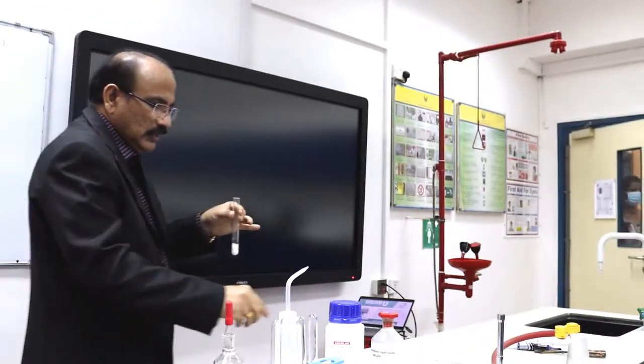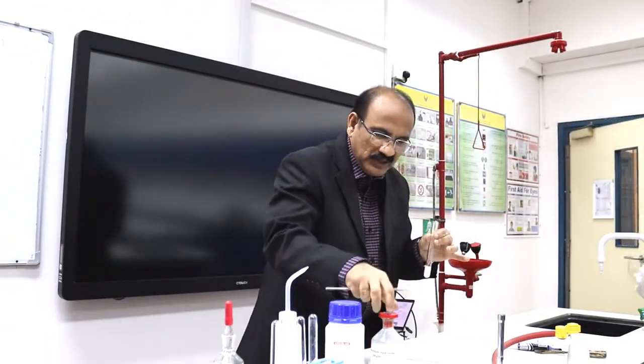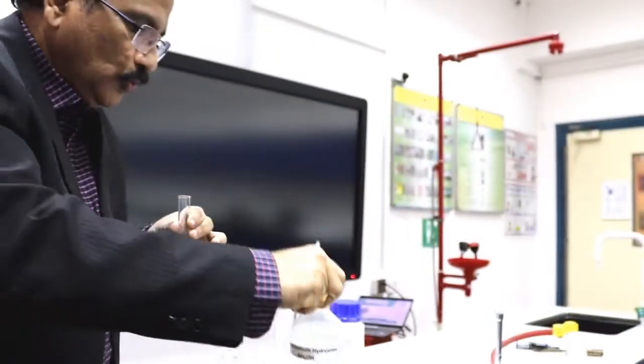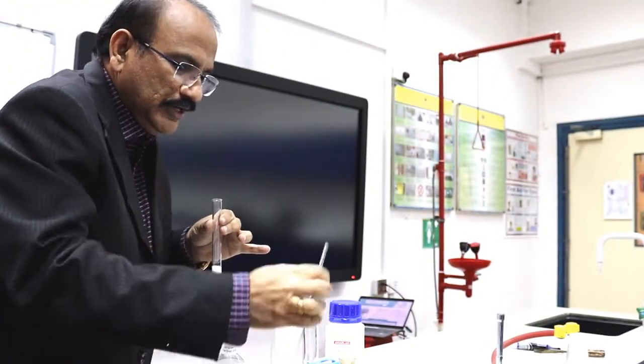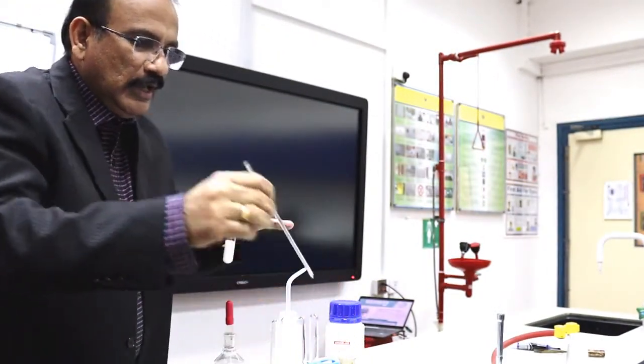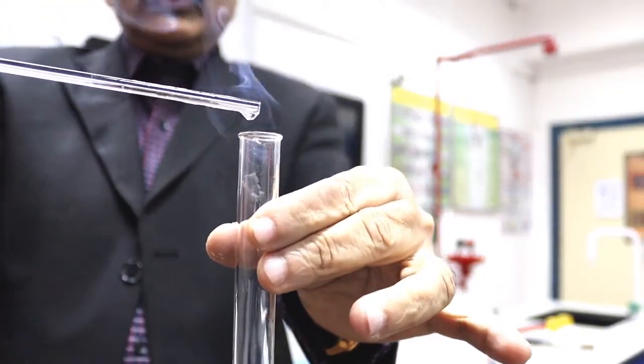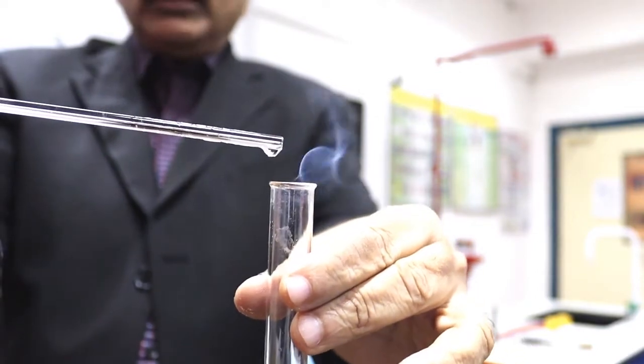Next step is we will take a bottle of ammonium hydroxide. Open the bottle, dip the glass rod, and introduce at the mouth of this one. You can see white fumes, white dense fumes are coming.